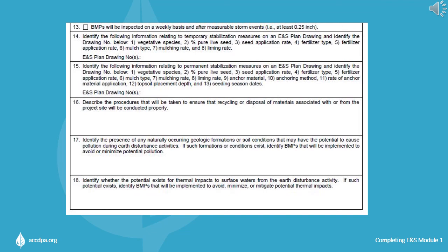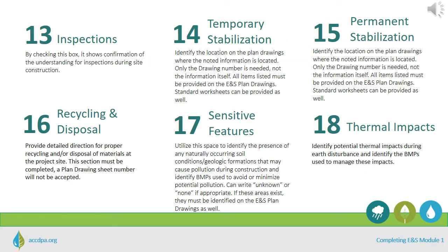Item 16 is to be completed with detailed direction on proper recycling or disposal of materials at the project site. A plan drawing sheet number will not be accepted here, as the NOI instructions explicitly state that a description is required on the module. Item 17 should be used to identify the presence of any naturally occurring soil conditions or geologic formations that may cause pollution during construction, and identify BMPs used to avoid or minimize potential pollution. The words 'unknown' or 'none' can be written if appropriate; however, it is suggested that a plan of action be provided if unexpected conditions are encountered. If these areas are known to be within the site boundary, they must be identified on the ENS plan drawings.